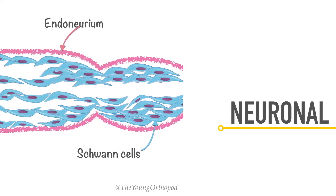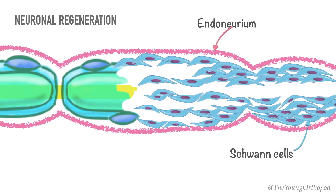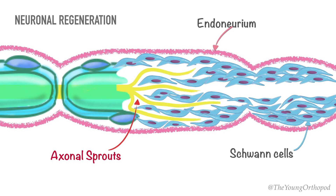Axonal sprouting from the axonal stump may be seen as early as within the first 24 hours after the injury. These axon sprouts begin to grow towards the endoneurial tube filled with Schwann cells distal to the point of injury, under the influence of neurotrophic substances contained within the distal nerve tissue.